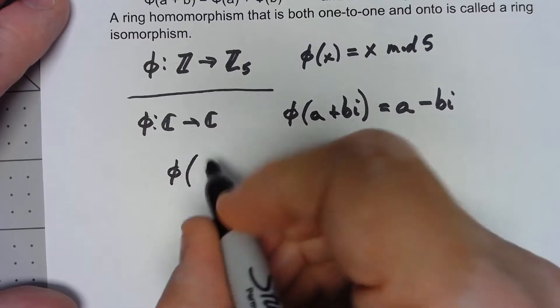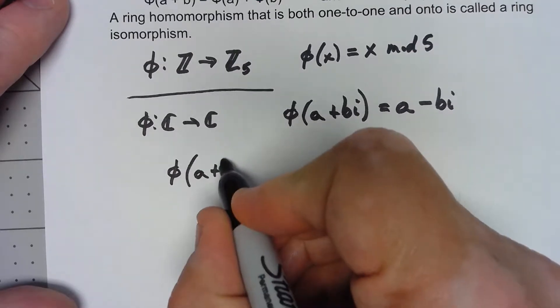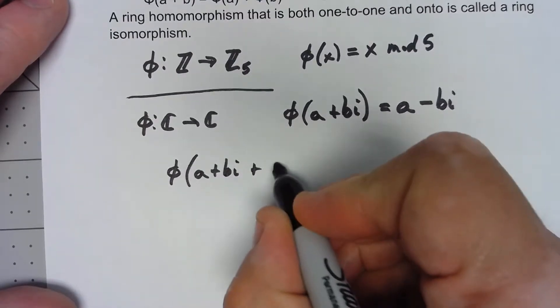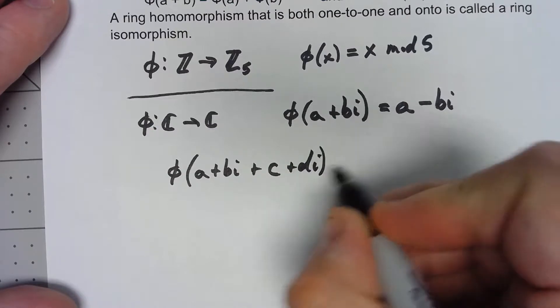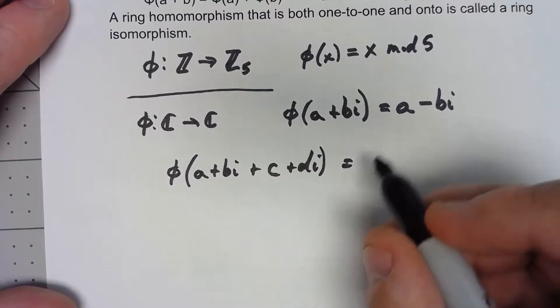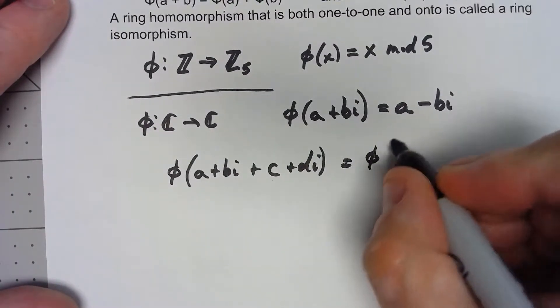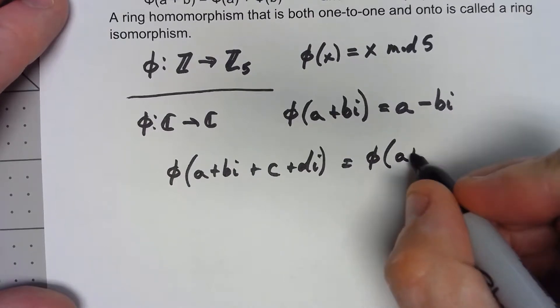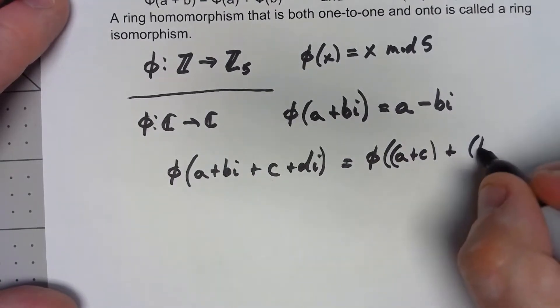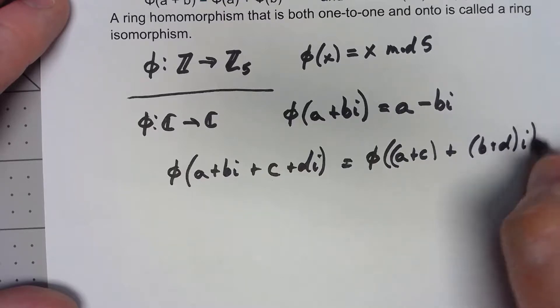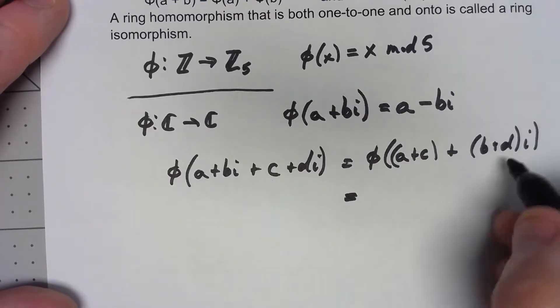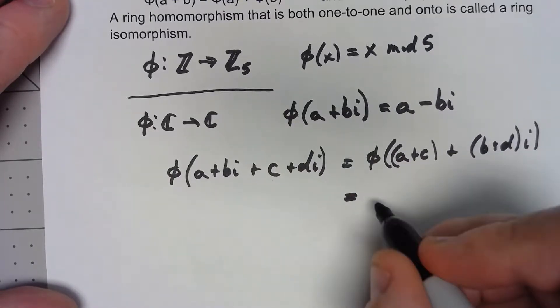If I have φ(a + bi) + (c + di), that's going to be φ(a + c + (b + d)i). Taking the conjugate of that, we're going to have (a + c) - (b + d)i. Well that's the same thing.